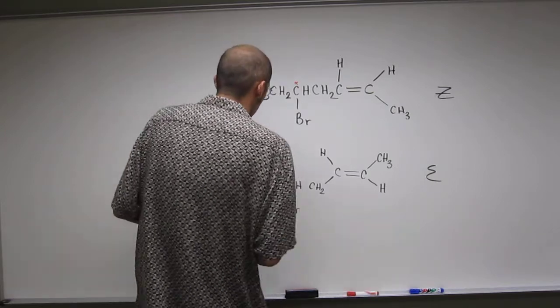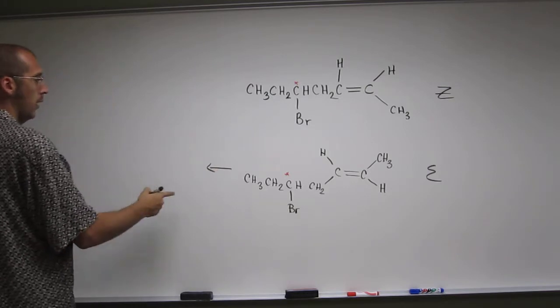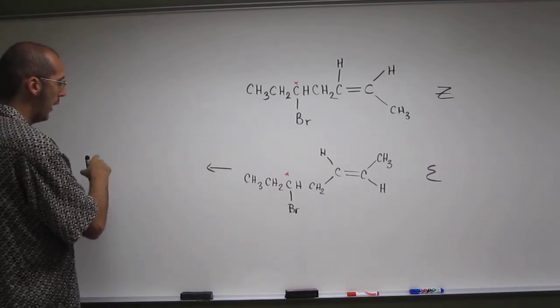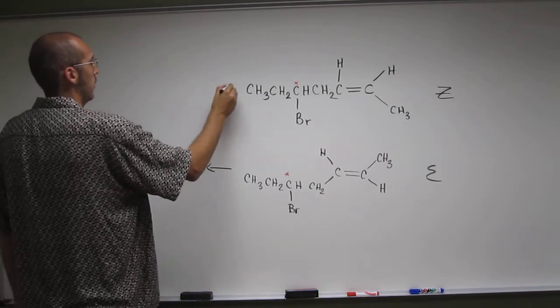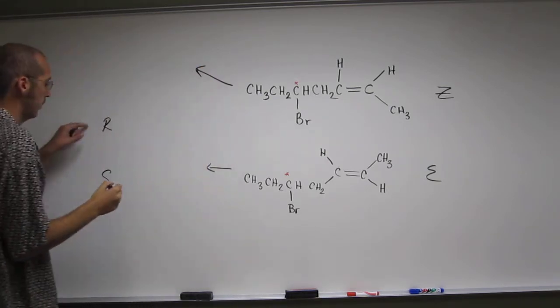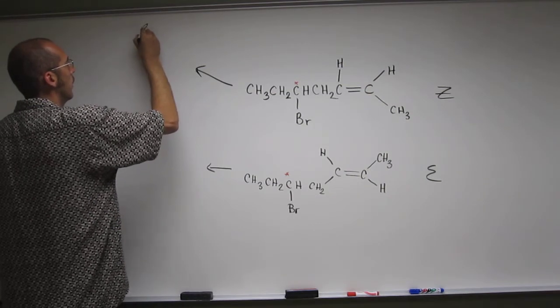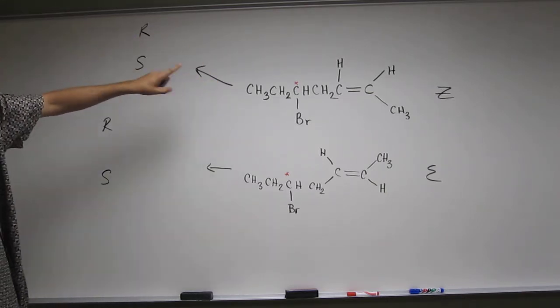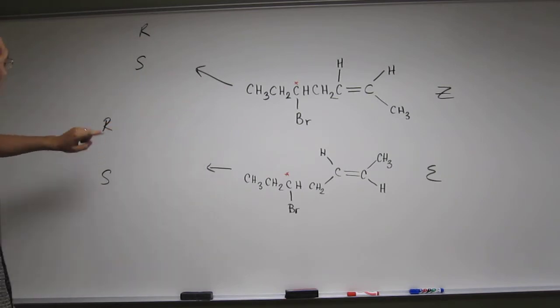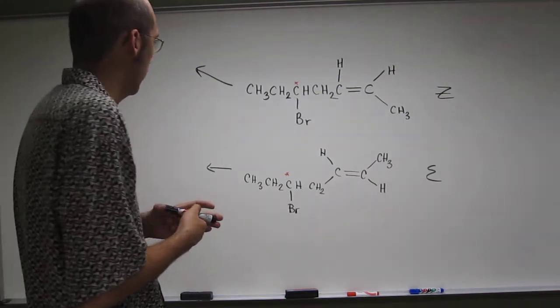And so for this one, you can have the R and the S, right? So the R or the S. So that would give you two stereoisomers. And then here, you're going to have the R or the S too. So you've got R,Z and S,Z and R,E and S,E. That's why you've got the four different stereoisomers.